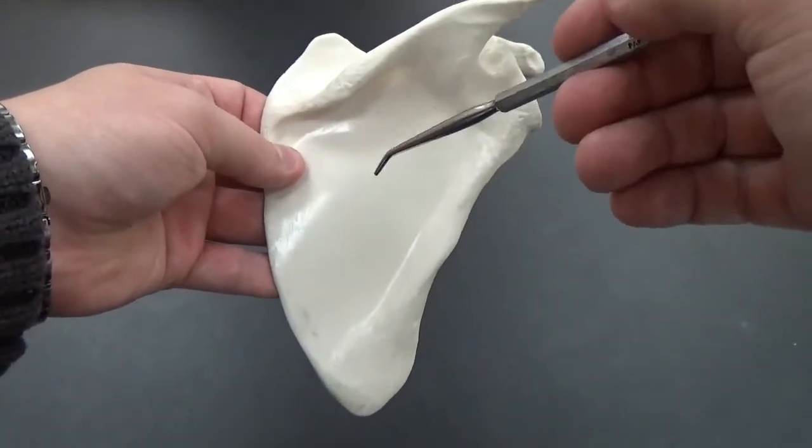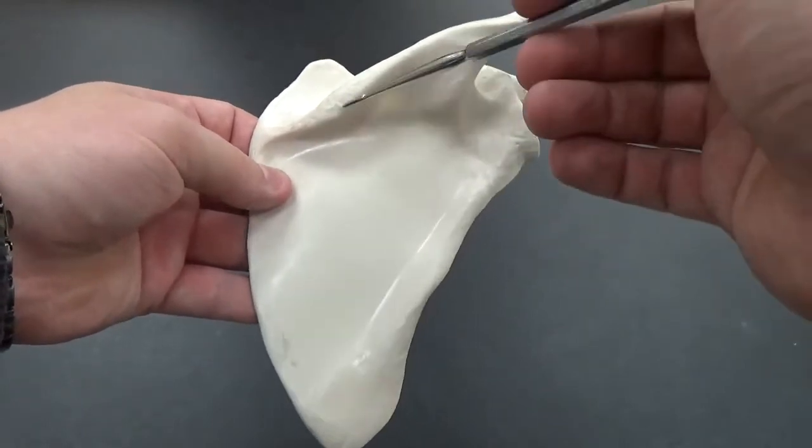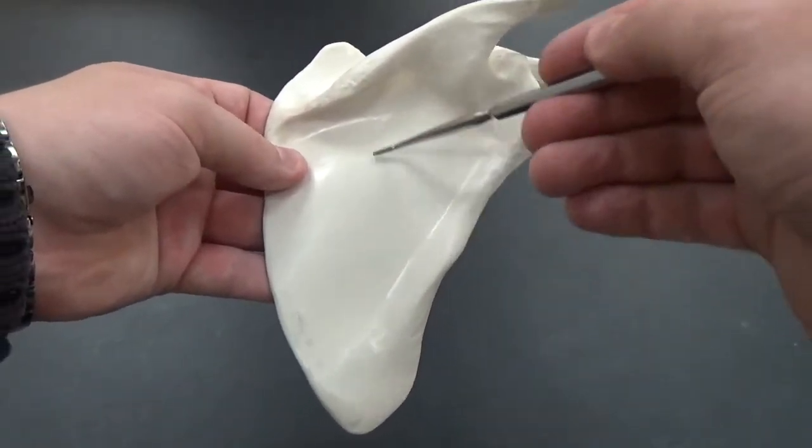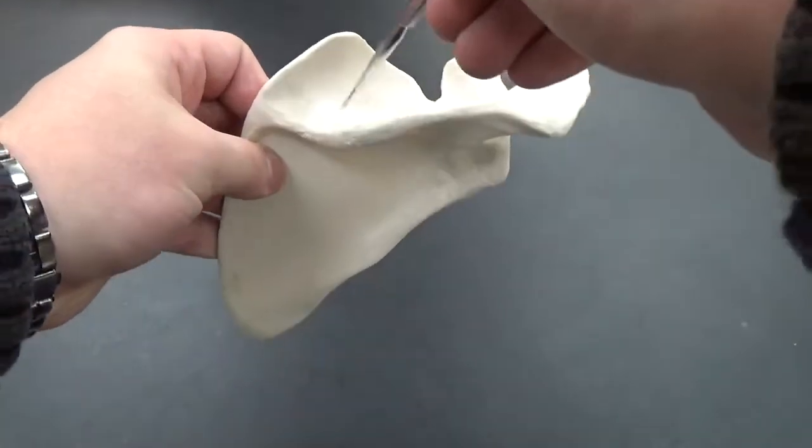The fossae on these are associated with the spine. We have the infraspinatus, below the spine, and the supraspinatus fossa.